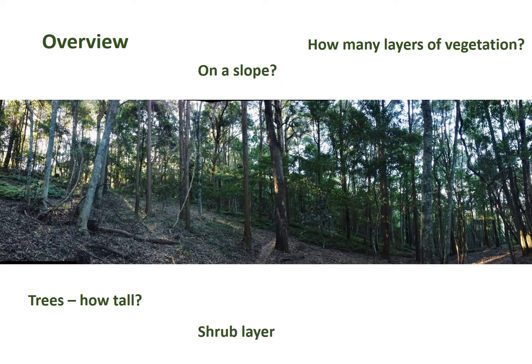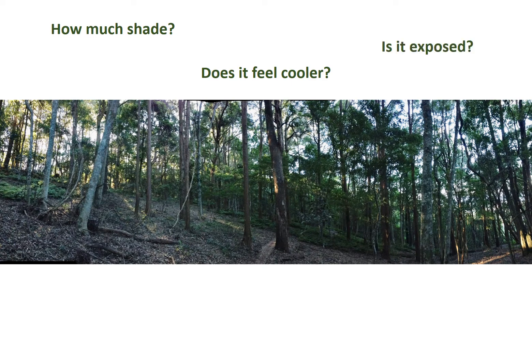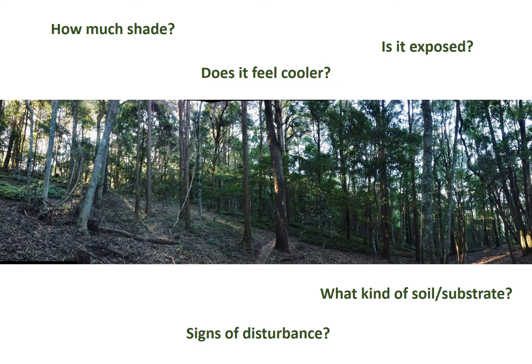How tall are the trees? What sort of shrub layer is there? Are there herbs? Herbs are plants with soft green leaves. And what sort of ground cover is there? You can also think about the amount of shade — does it feel cooler? These are all characteristics which will affect the vegetation growth. How exposed is it? What kind of soil or substrate? That's really important. And what signs of disturbance can you see?